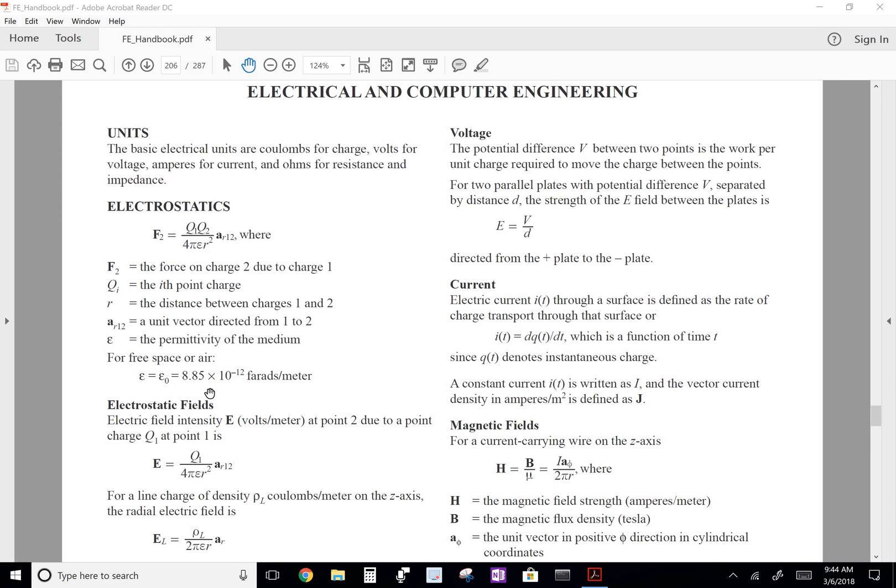And we're given the constant right here. And A is just a unit vector showing the direction of the E field. And R is the distance between the two charges.